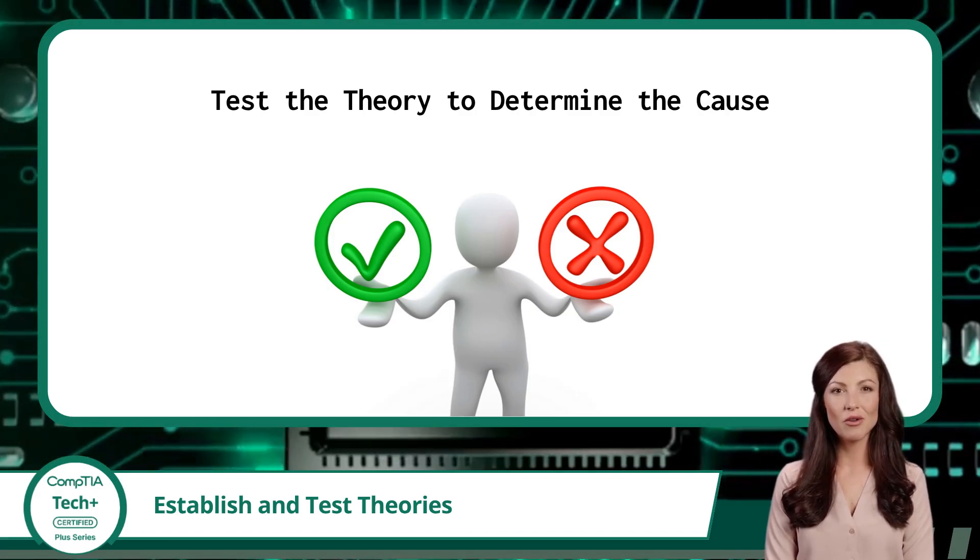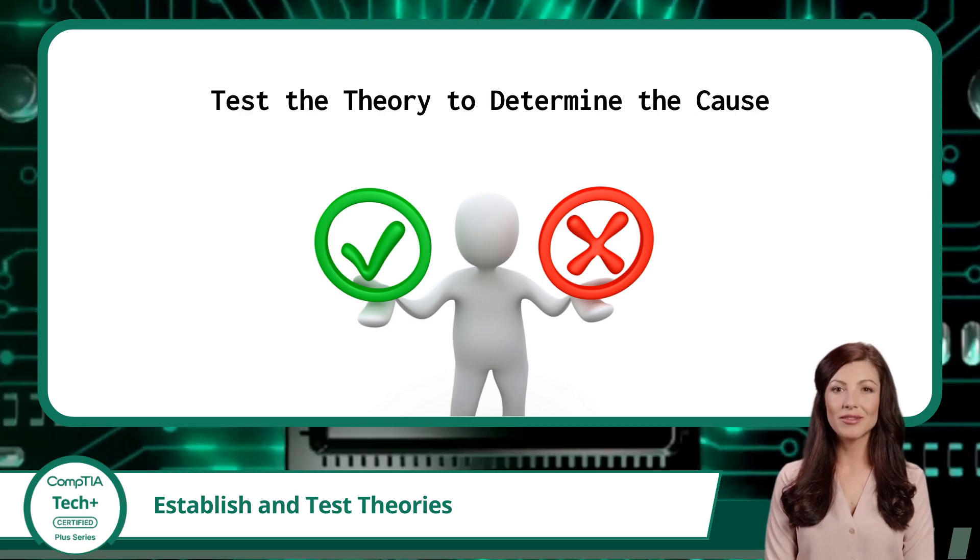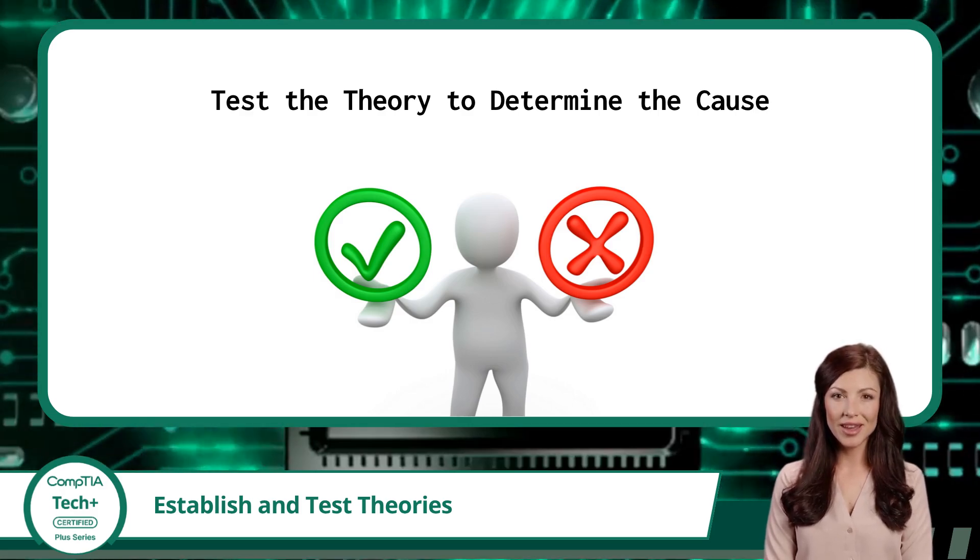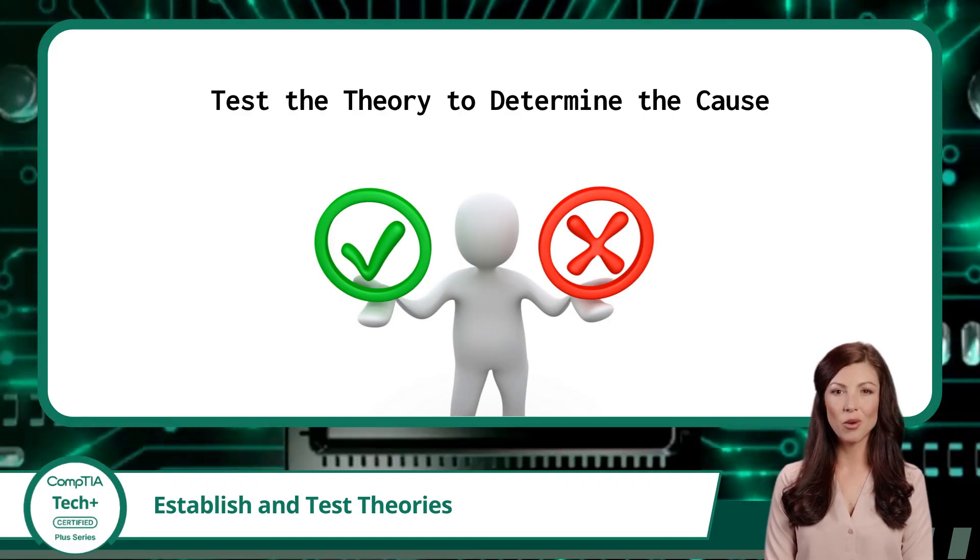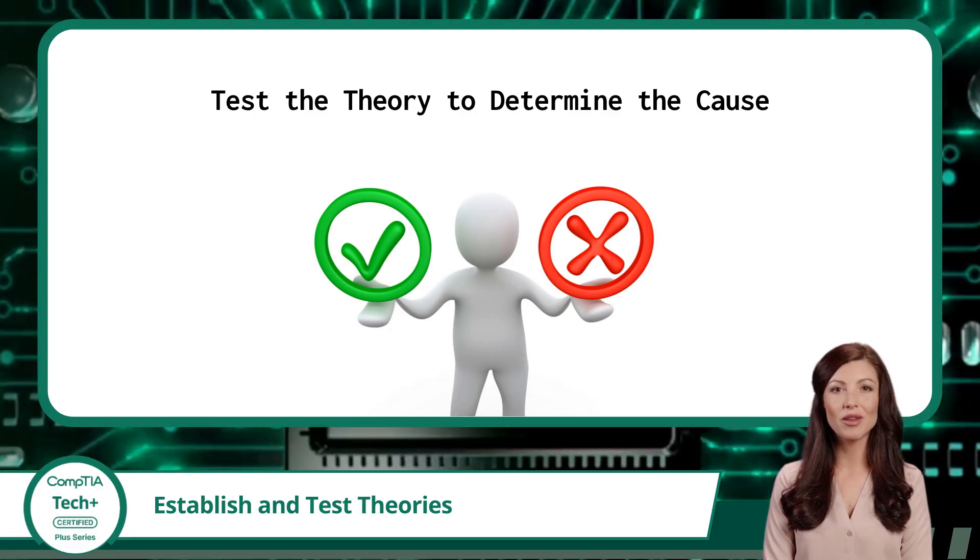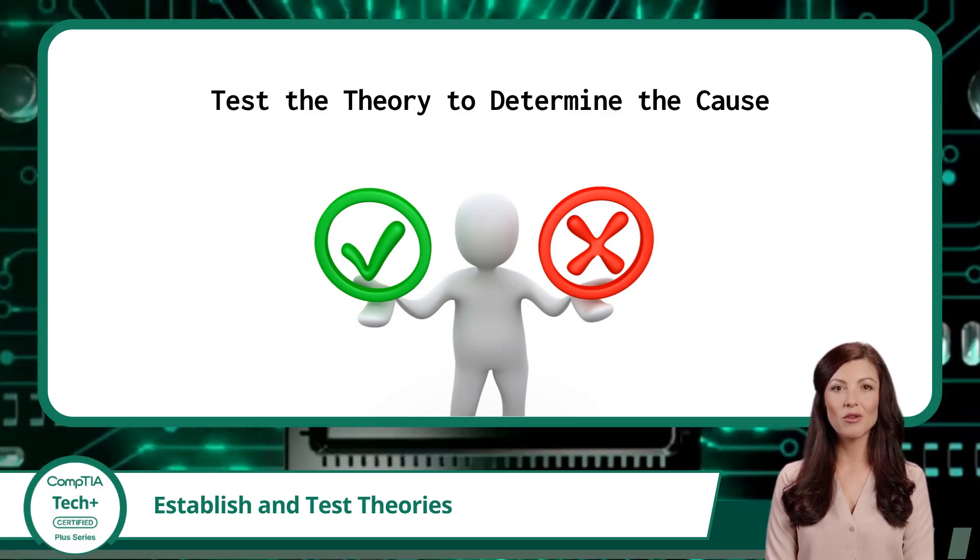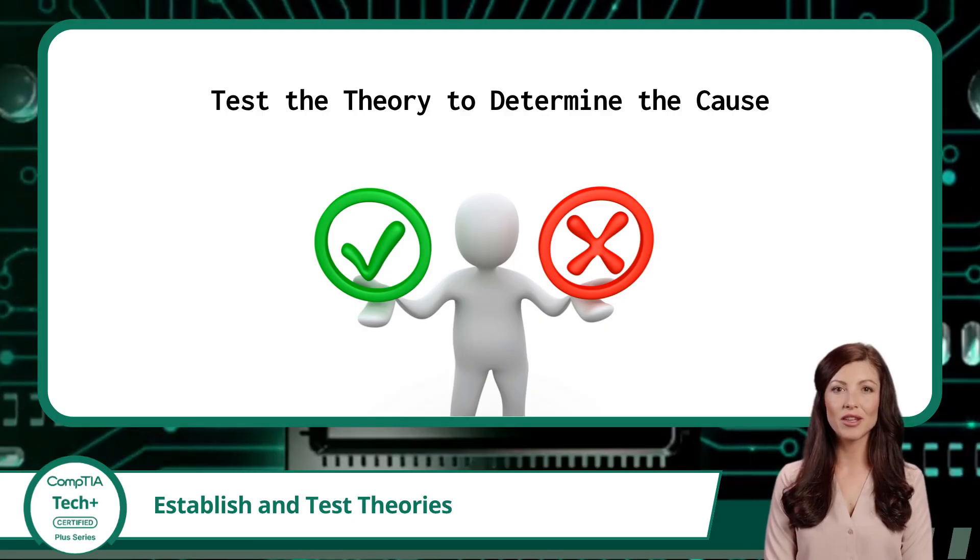If testing does not confirm your theory, establish a new theory. At some point you may run out of ideas, and that is okay. At that point you need to find a way to escalate the problem. A form of escalation could be seeking help from another technician, a supervisor, or a specialist in the area you are having an issue with.